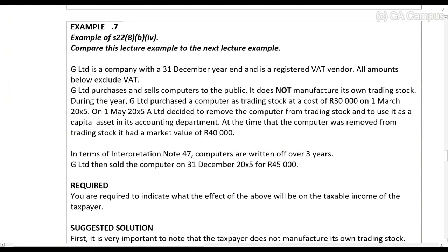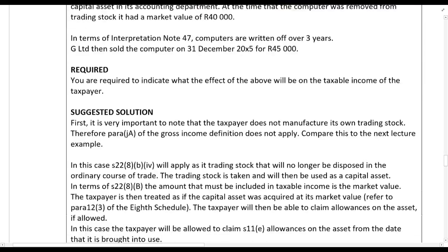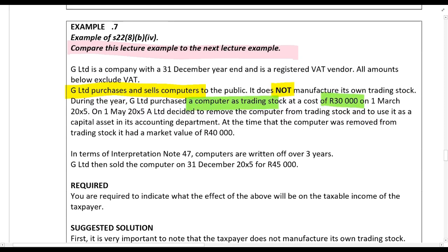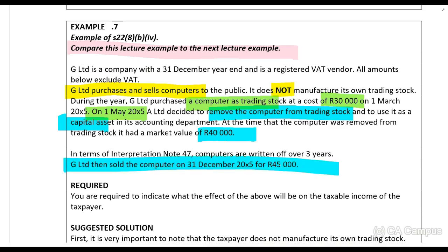Example seven — and note: compare this example to the next one that follows. G Limited is a company with a 31 December year-end and is a registered VAT vendor. All amounts below exclude VAT. G Limited purchases and sells computers to the public — it does not manufacture its own trading stock; that is very important to note. During the year, G Limited purchased a computer as trading stock at a cost of thirty thousand rands, so you claim a deduction for that. Then on the 1st of May, G Limited decided to remove the computer from trading stock and to use it as a capital asset in the accounting department. At that time the computer had a market value of forty thousand rands. So we have stock that becomes a capital asset — you are treated as if you sold the stock at its market value of forty thousand rands.